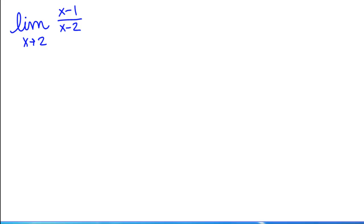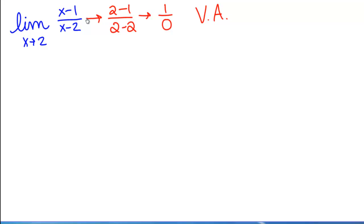We want to see how knowing that we have a vertical asymptote, and knowing that there are only three possible answers for a limit as it approaches a vertical asymptote when it's in the form non-zero divided by zero, helps us solve a problem. Say we're finding the limit as x goes to 2 of (x−1)/(x−2). We plug in: 2 minus 1 divided by 2 minus 2 gives us 1 over 0 — a non-zero number divided by zero — which tells us we're dealing with a vertical asymptote.